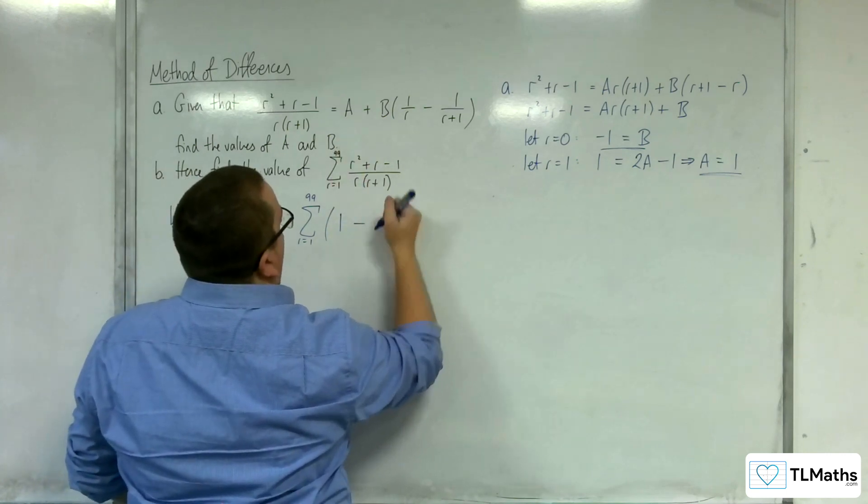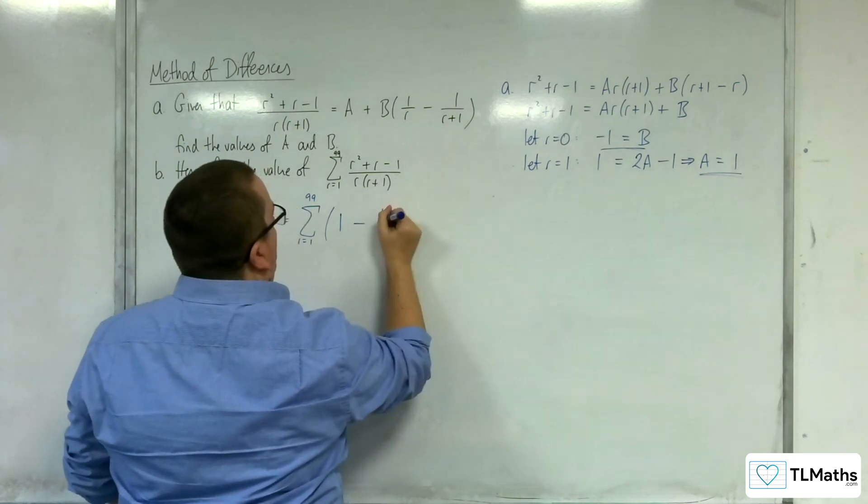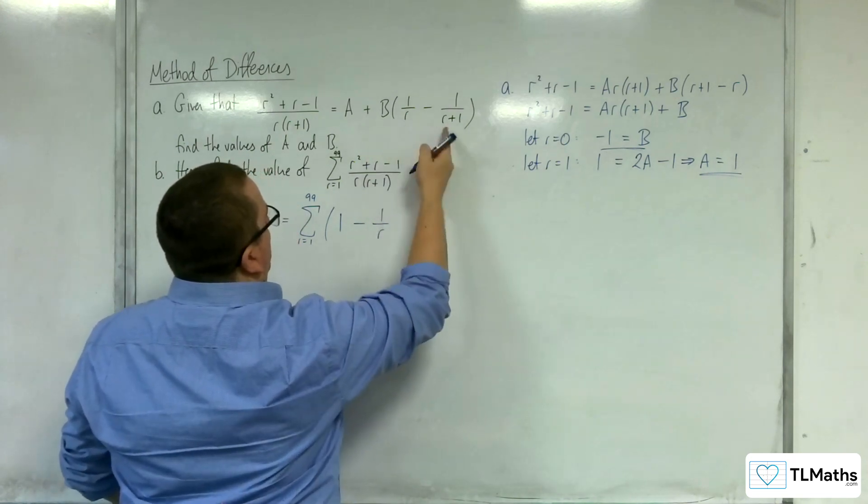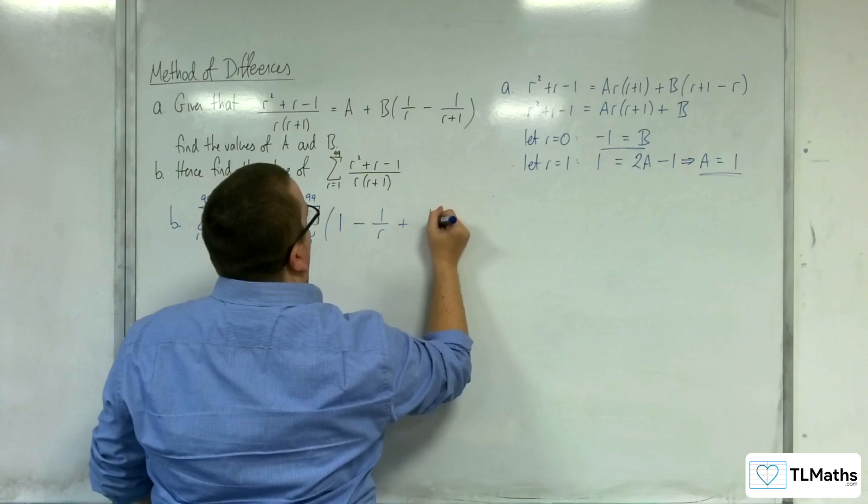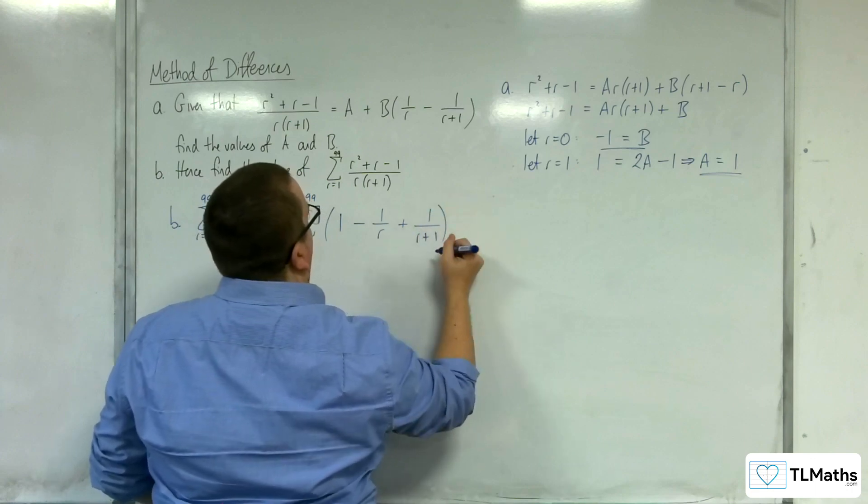So take away all of that. So take away 1 over r, and I'm going to multiply through as well, so we'll get plus 1 over r plus 1.